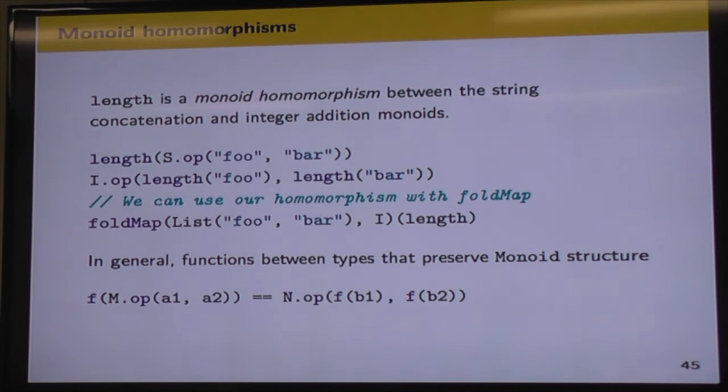So monoid homomorphisms. The book kind of has a little side panel about these. They don't delve into too much detail, so don't stress if this isn't all clear to you now. But we'll start with an example. So length is a monoid homomorphism between the string concatenation monoid and the integer addition monoid. So what this means is that we can take, in the first example, our string monoid, and we can combine our two strings, foo and bar, and then take their length. The ultimate goal is we want to get the length of these strings concatenated. But as we saw before, if we had a naive implementation of our fold here, then this could be quite slow. It might be quadratic, for example, to concatenate all the strings and then take their length at the end.